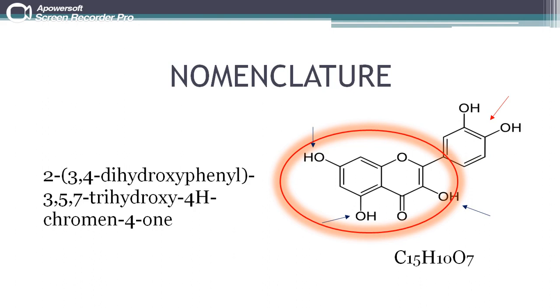The parent compound has 3 OH groups at positions 3, 5, and 7, shown by the blue arrows.